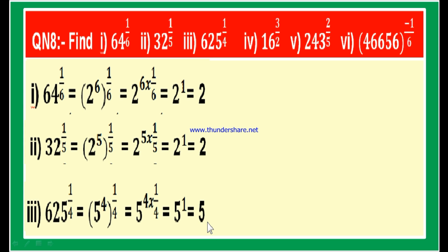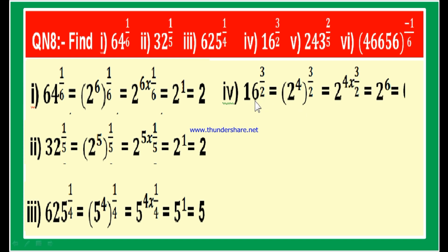Now the fourth part: 16 to the power of 3 by 2. 16 is 2 power 4, so this is 2 power 4 whole power 3 by 2, which equals 2 to the power of 4 into 3 by 2. That is 2 to the power of 6. And 2 to the power of 6 is equal to 64.